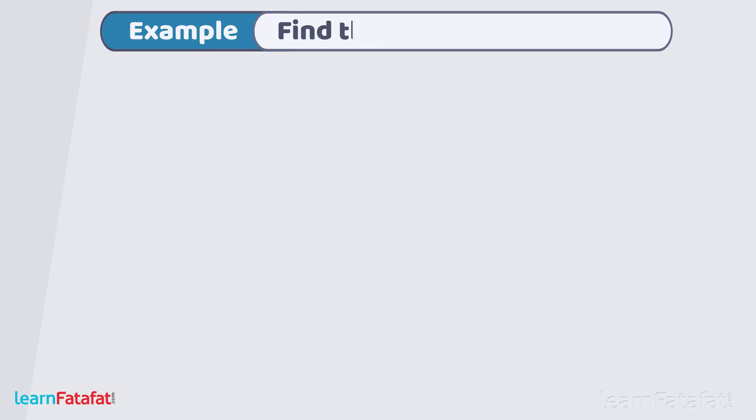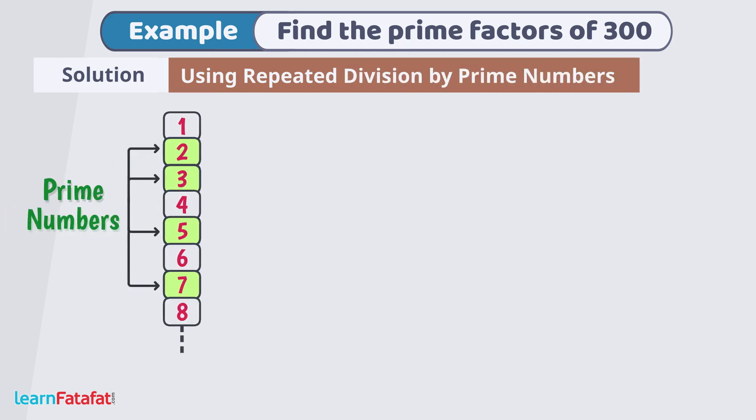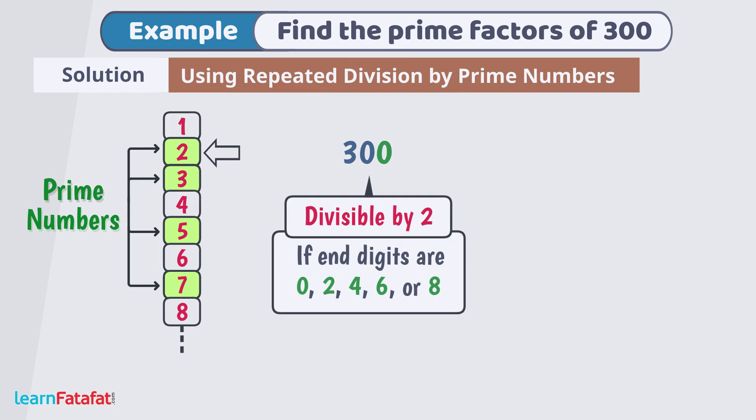Example, find the prime factors of 300. Let's find prime factors by repeated division of number by prime numbers. Take smallest prime number that is 2. Check last digit of 300. It is 0. So, by divisibility rule of 2, the number 300 is divisible by 2.